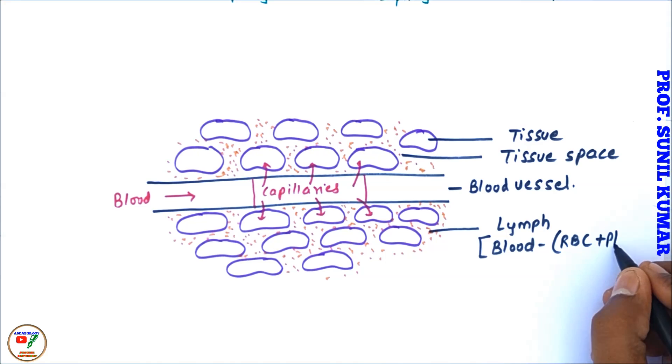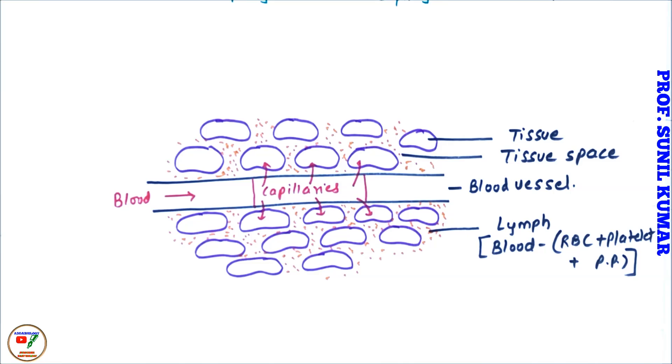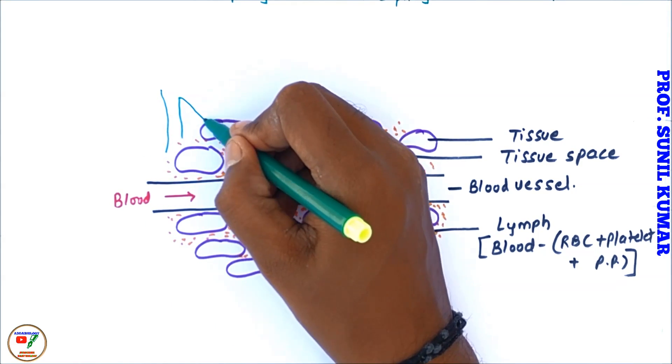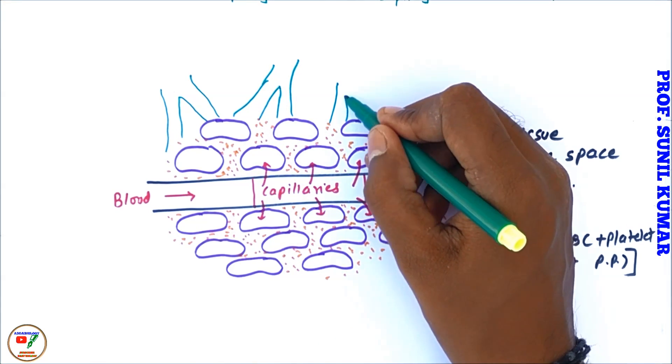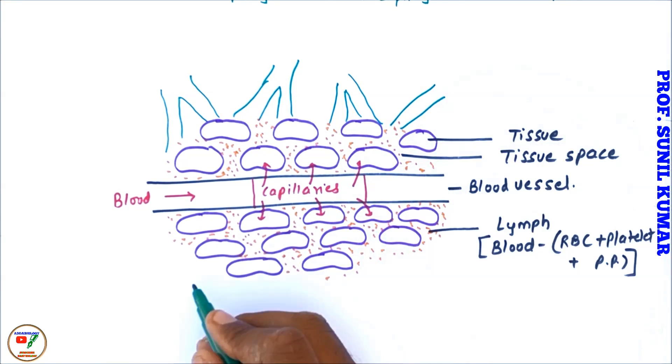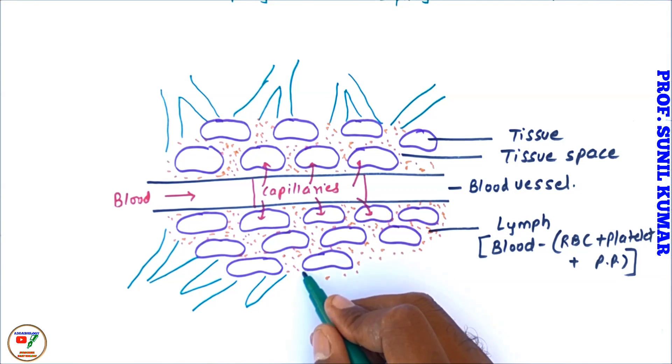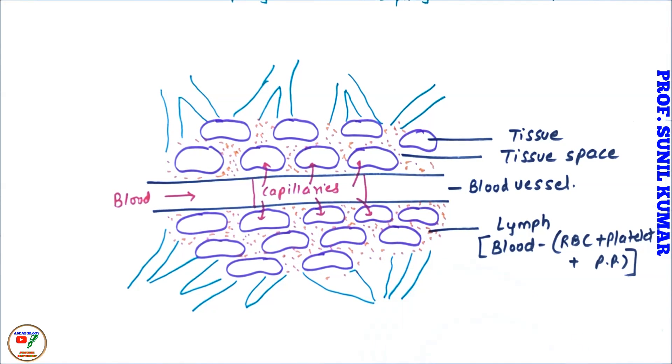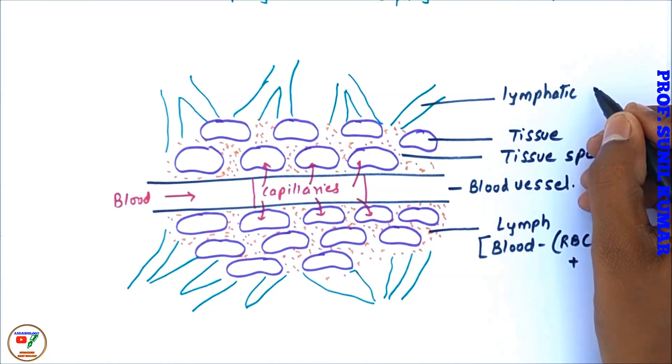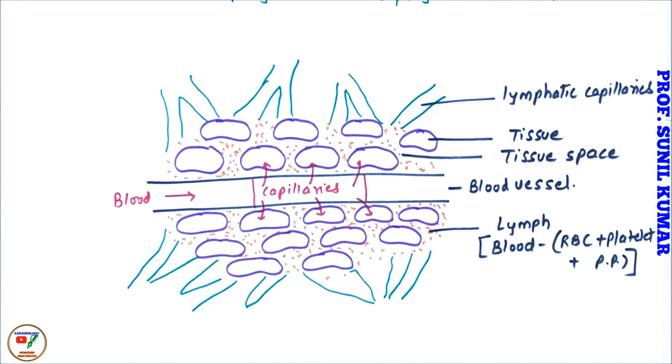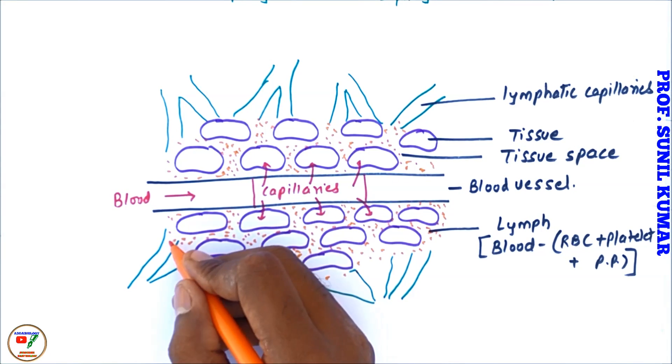Now what we need to understand here: this lymph somewhere gets collected in the capillaries and those capillaries are nothing but lymphatic capillaries. Just for explanation, I am drawing this simple diagram for you to understand. These are all the lymphatic capillaries which are going to collect the lymph which is formed during the blood flow. So now these are all the lymphatic capillaries.